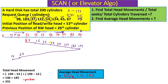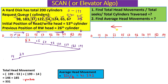Now let's change the direction. With the same disk (cylinders 0 to 199) and the same request queue, suppose the read/write head is moving toward lower cylinder numbers. Starting at cylinder 53, in this direction the requests less than 53 in the queue are 37 and 14. So we service 37 first, then 14.